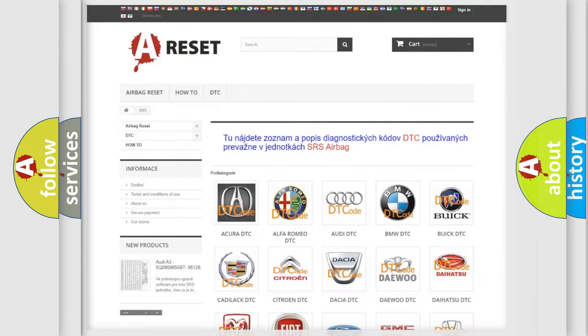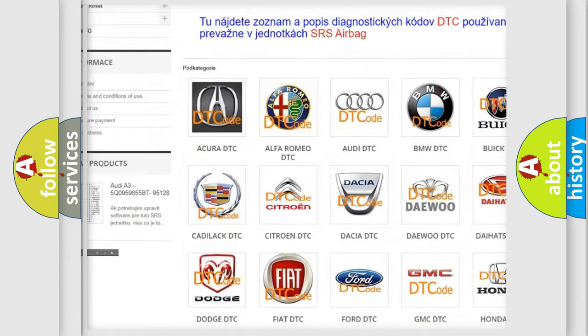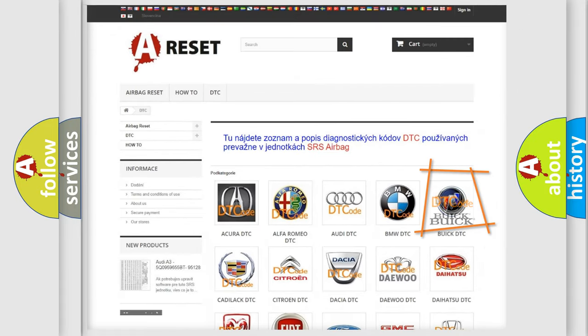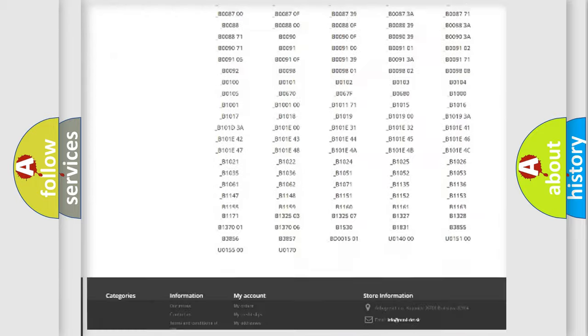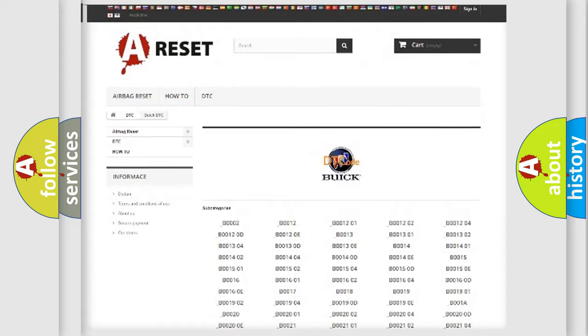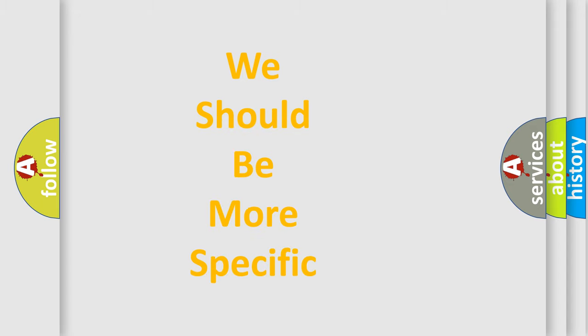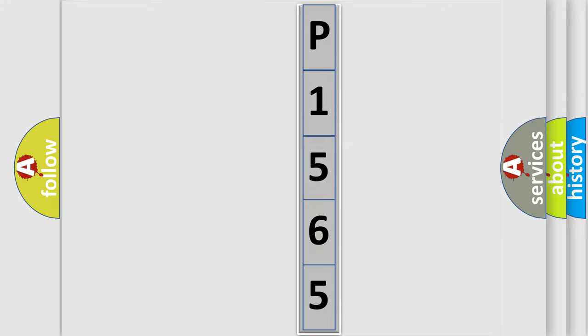Our website airbagreset.sk produces useful videos for you. You do not have to go through the OBD2 protocol anymore to know how to troubleshoot any car breakdown. You will find all the diagnostic codes that can be diagnosed in Buick vehicles and many other useful things. The following demonstration will help you look into the world of software for car control units.